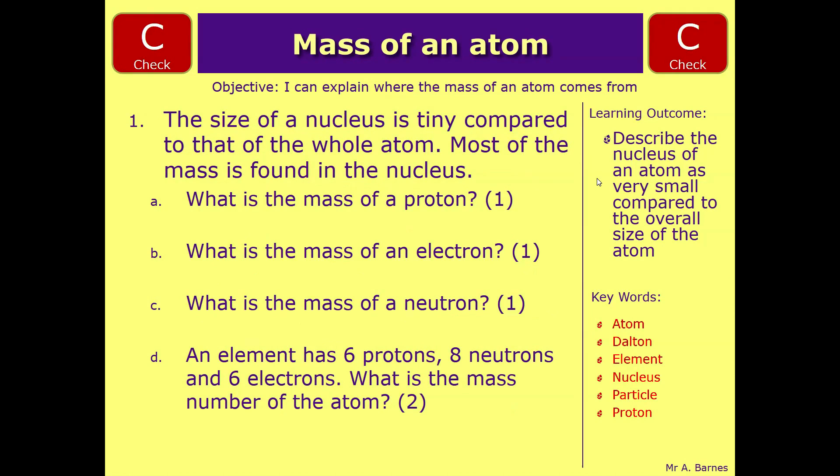Okay, let's have a look. So if we start off with what is the mass of a proton, that's just basically remembering that it's 1. The electron is either 1 divided by 1837 or 0. You'd have got the mark for either of those. The mass of a neutron is 1.